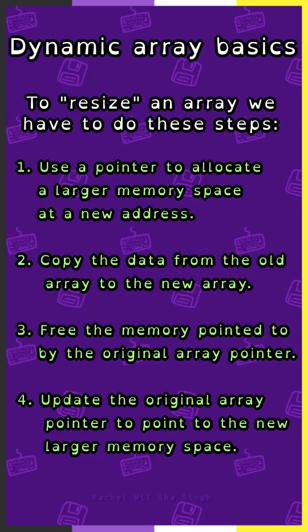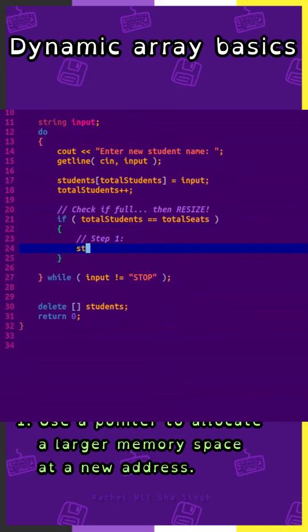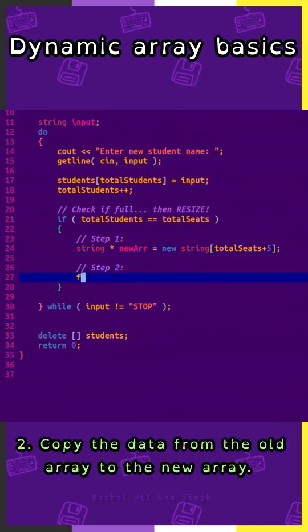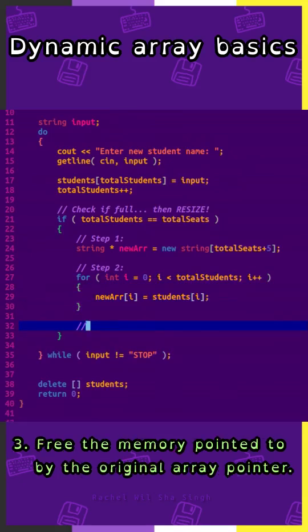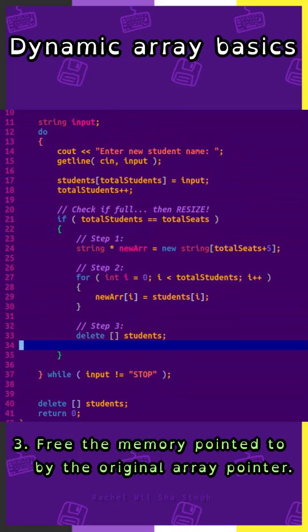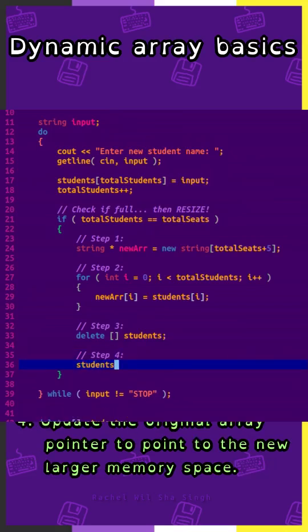To resize an array, we have to do these steps: Use a pointer to allocate a larger memory space at a new address. Copy the data from the old array to the new array. Free the memory pointed to by the original array pointer. Update the original array pointer to point to the new, larger memory space.